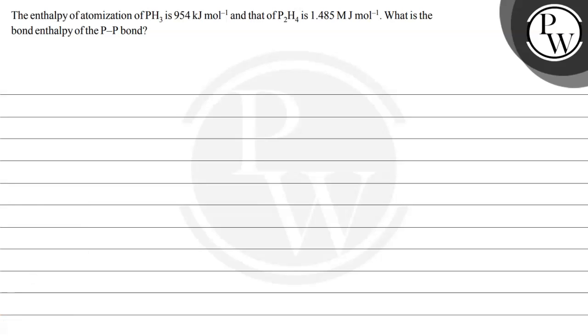Hello Bacho, let's read this question. The question says the enthalpy of atomization of PH3 is 954 kilojoule per mole and that of P2H4 is 1.485 mega joules per mole. Then what is the bond enthalpy of the P-P bond, P single bond P bond.